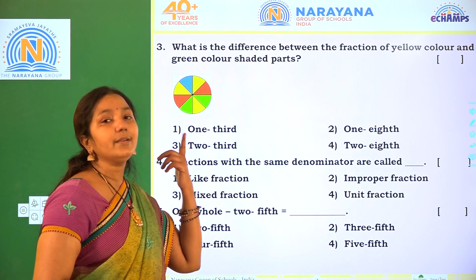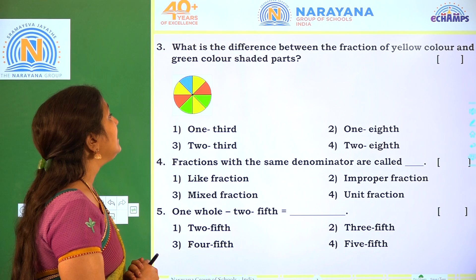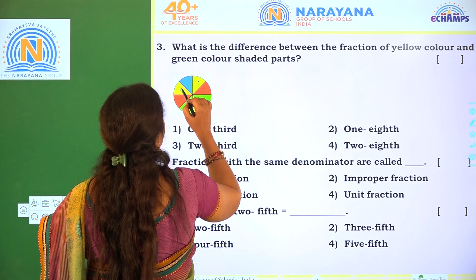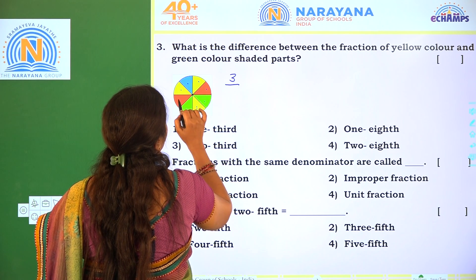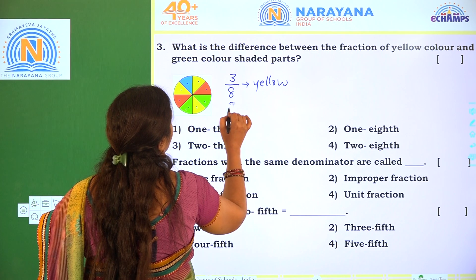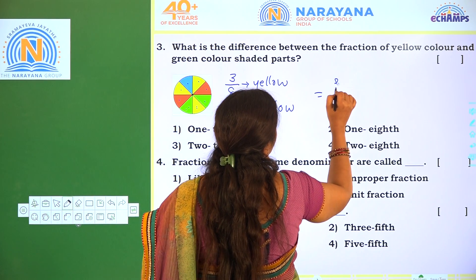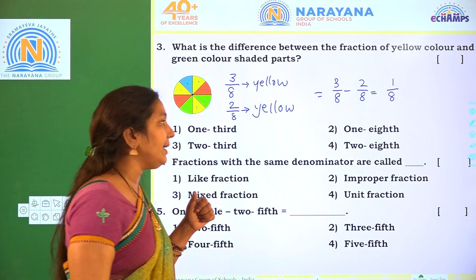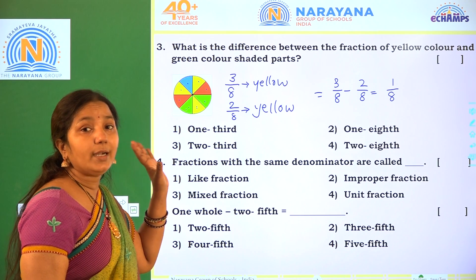Next one. One picture is given. What is the difference between the fraction of yellow color and green color shaded part? So first identify the fraction of yellow color: 3 parts shaded out of 8 total parts, so that is 3 by 8. And coming to green color: 2 parts, so 2 by 8. So the difference between yellow color and green color is 3 by 8 minus 2 by 8, which gives 1 by 8. So how do we read 1 by 8? One eighth. So one eighth part is the difference between yellow color and green color.